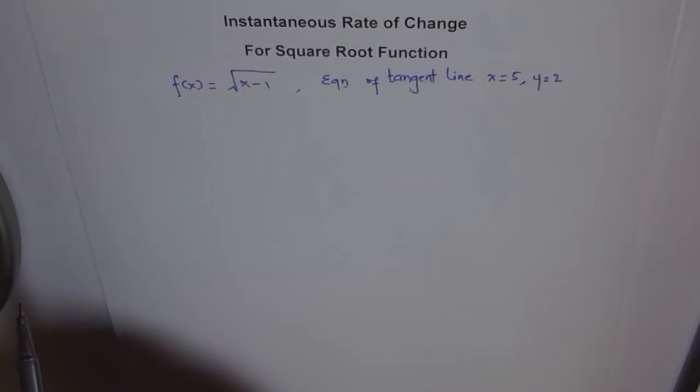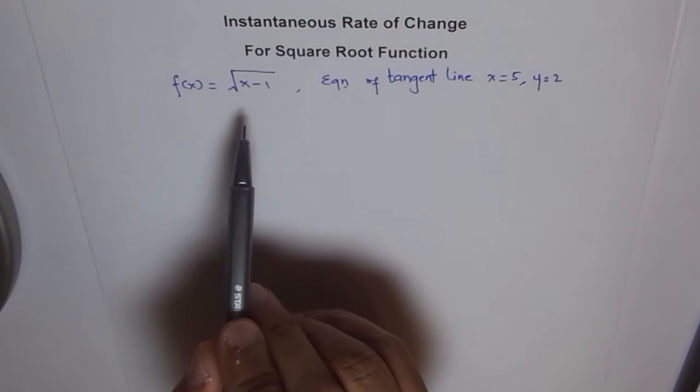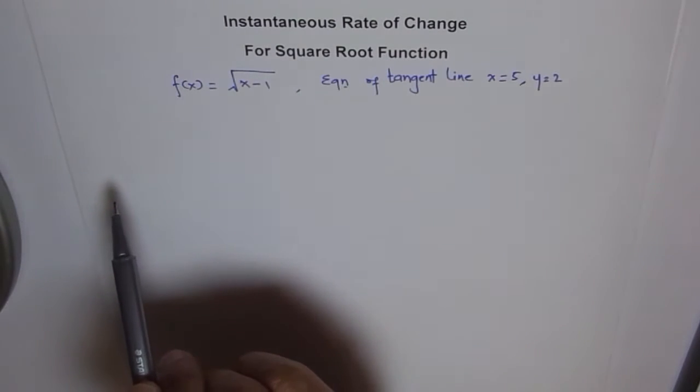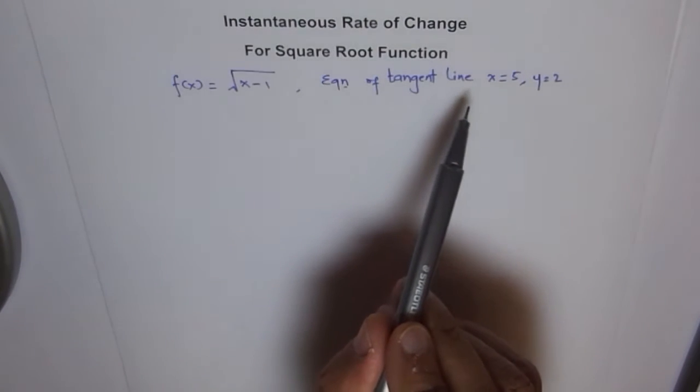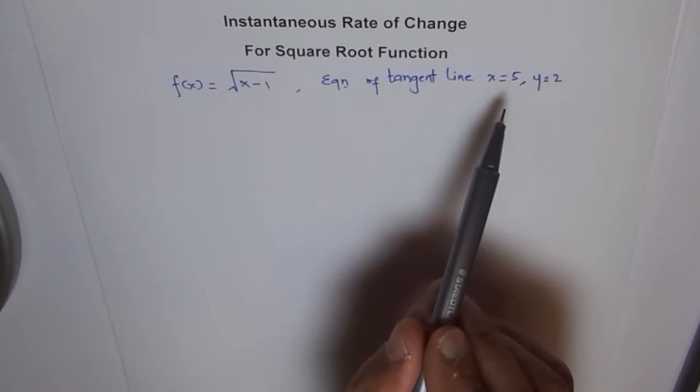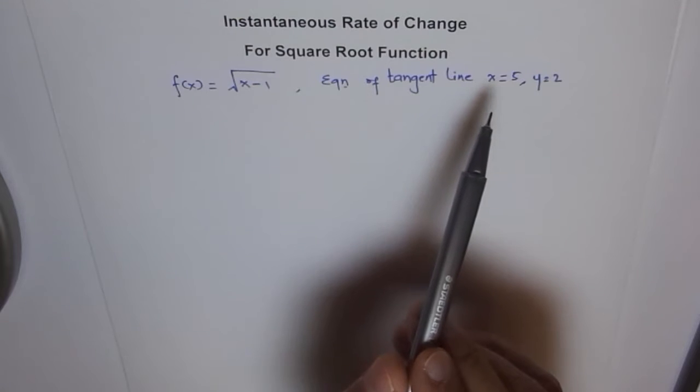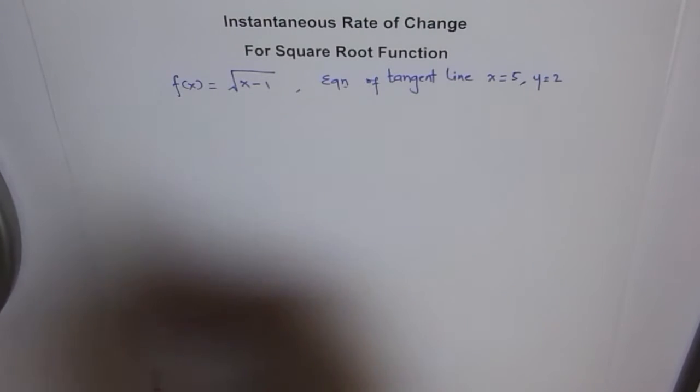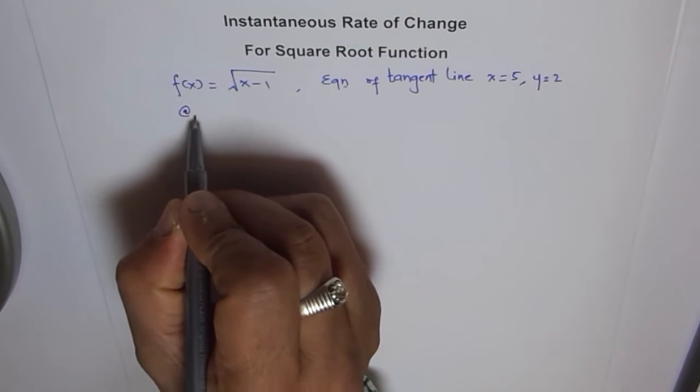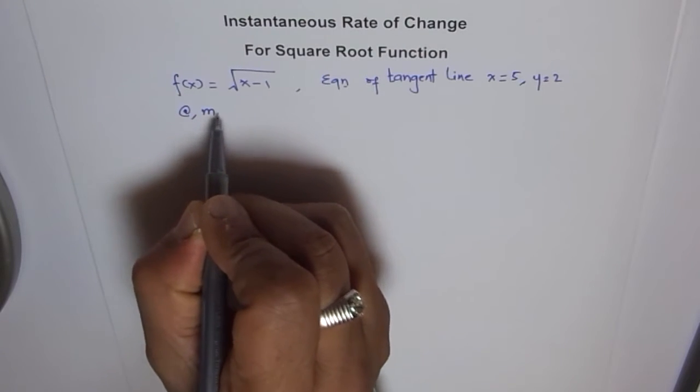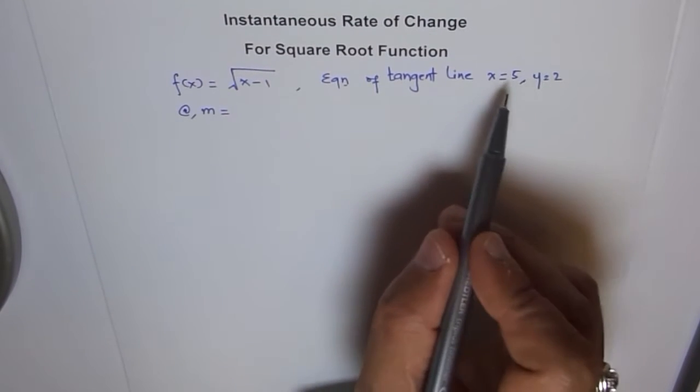Now to find the instantaneous rate of change, that is to find the slope of this function, what should we use? We could use difference quotient. And since we need to find the equation of tangent line at point x equals 5, let's find the slope or instantaneous rate of change of this function at 5.